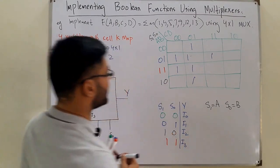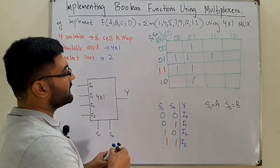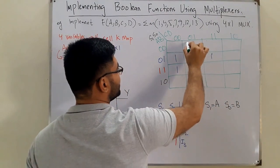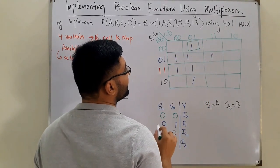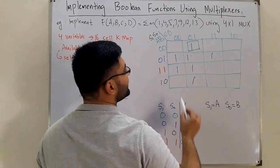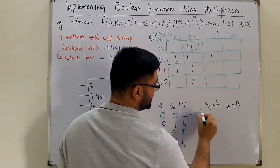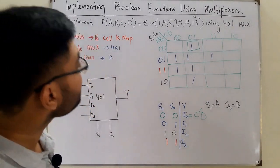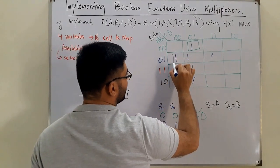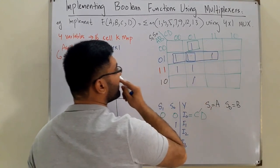When A=0 and B=0, we check that row. There is a single one, representing C in the low state and D in the high state — that is C'D. So I0 = C'D. When A=0 and B=1, we have two groups in that row.